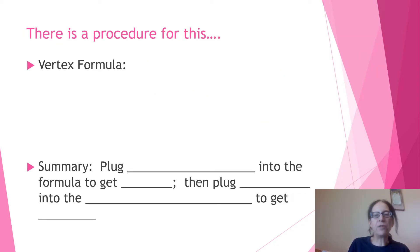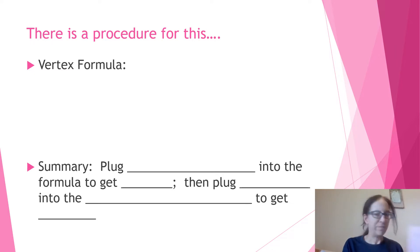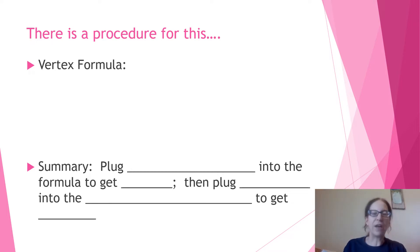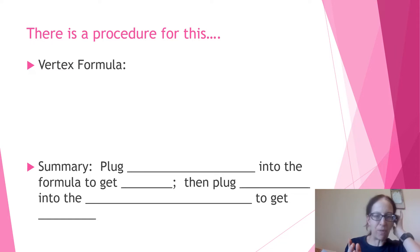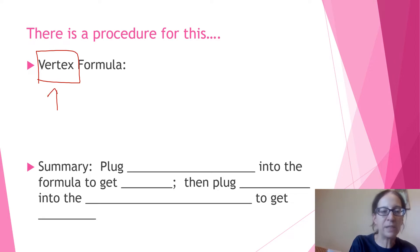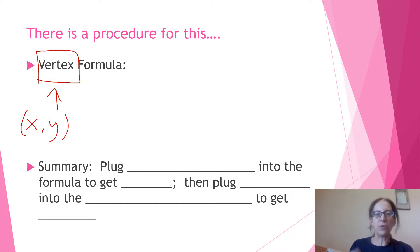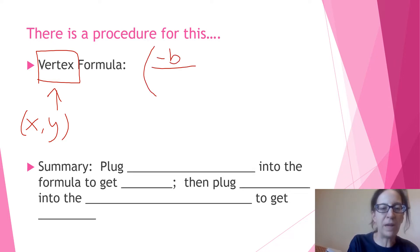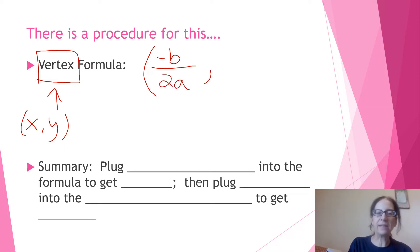There is a procedure for this called the vertex formula, and I want to take you through it. Remember that the vertex is a point with an x and a y coordinate, so if you're asked to state the vertex, you need to produce both. The vertex formula looks like this: the x coordinate is the opposite of b over 2a.